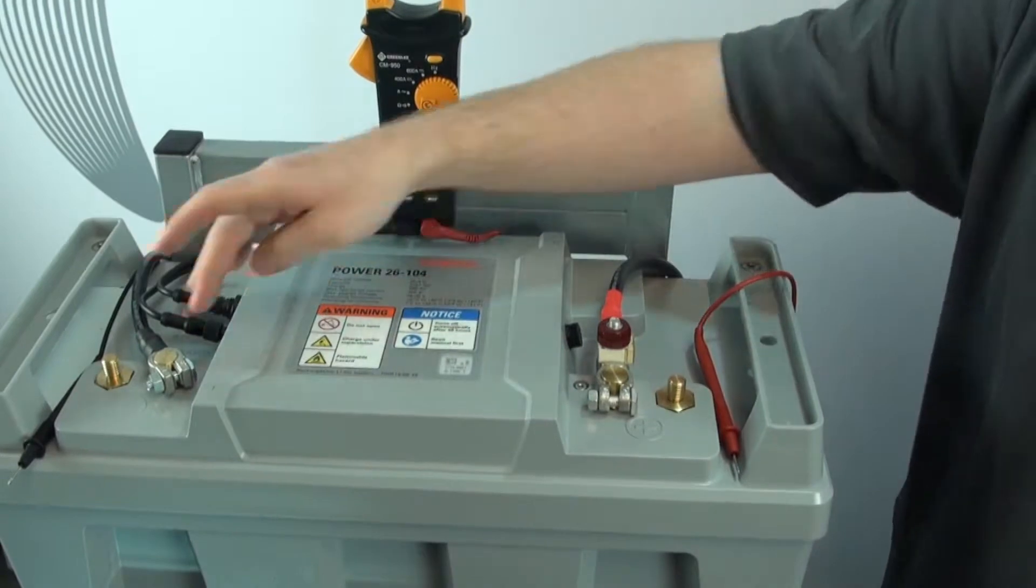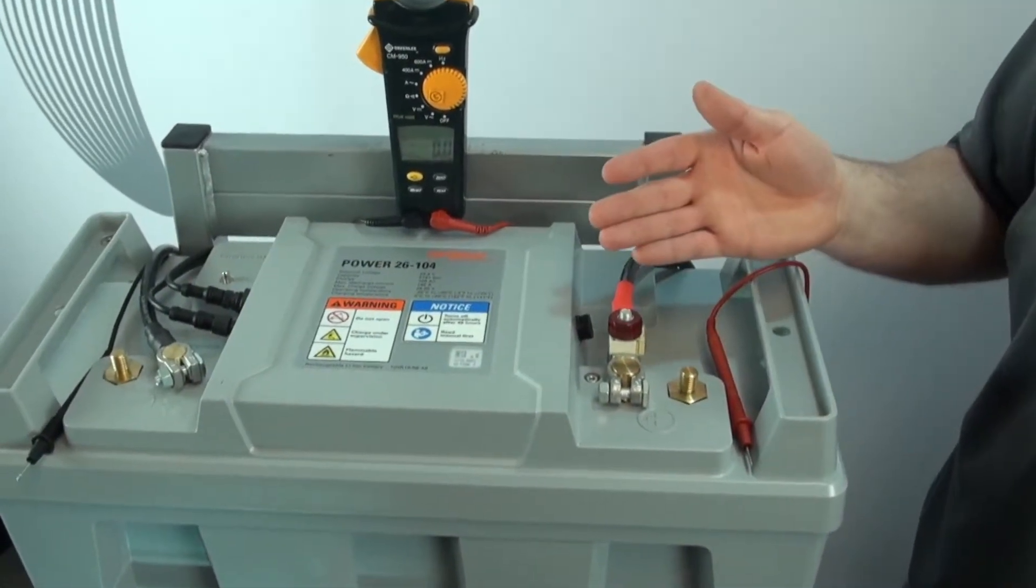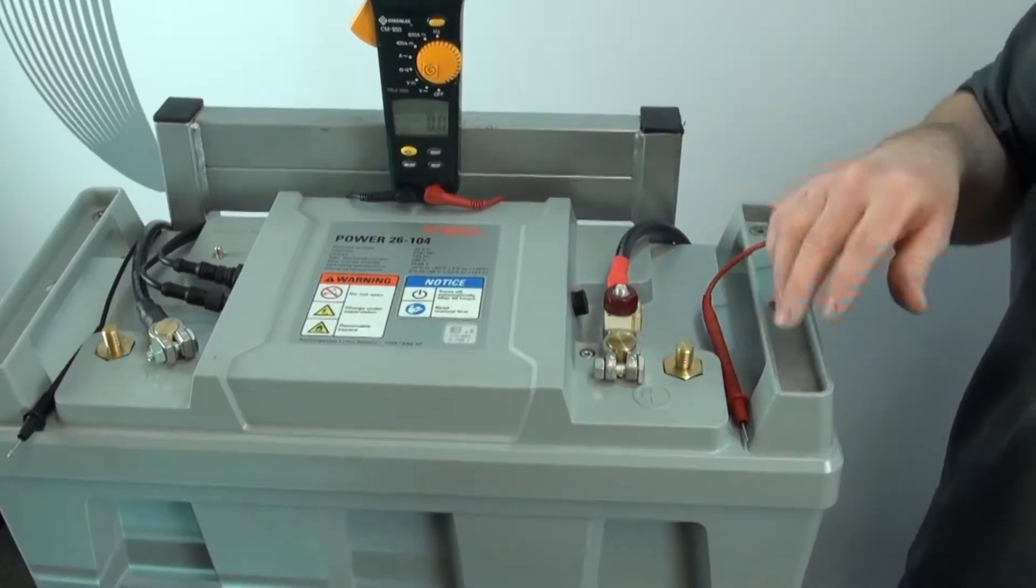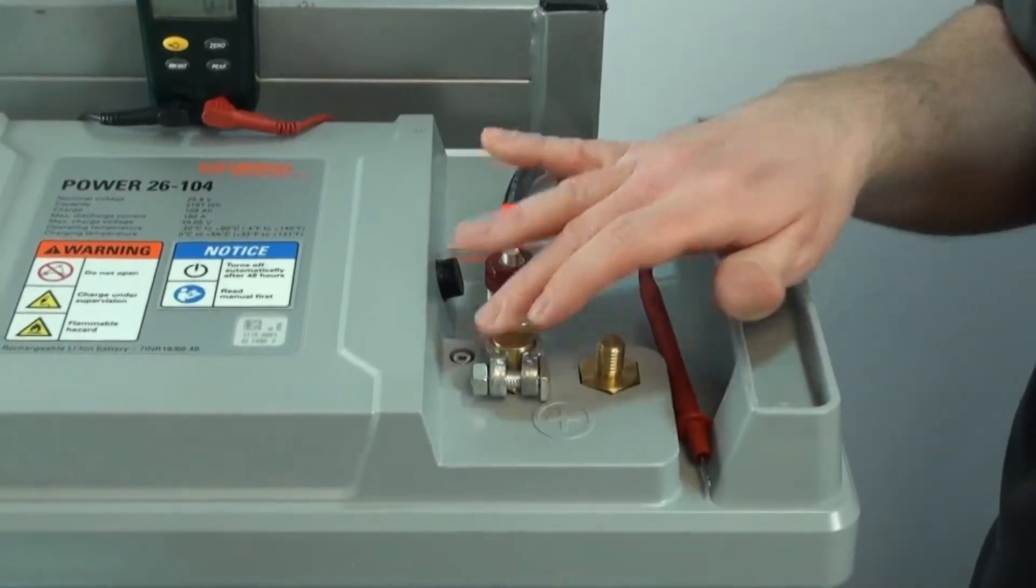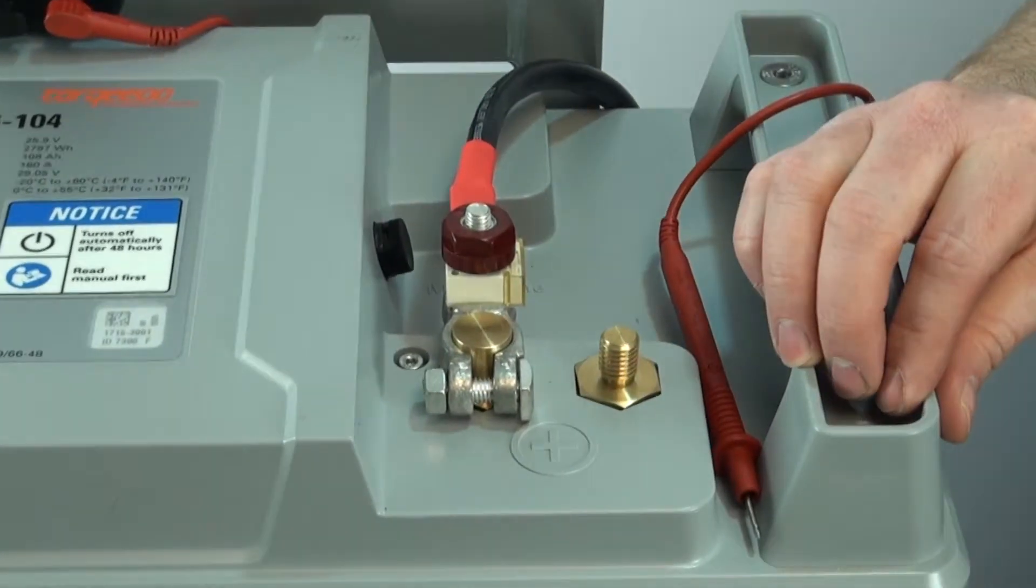Now I want to talk about the contact points right here. All you need is a simple light metal brush or a battery terminal cleaner. Sometimes these can get dull, and when they do, it creates a high resistance. So you want to keep everything looking clean and shiny.